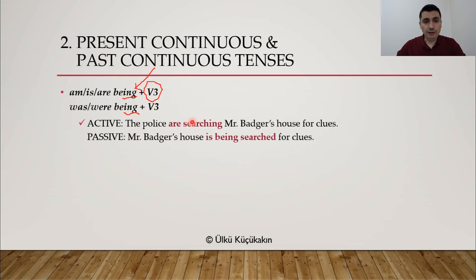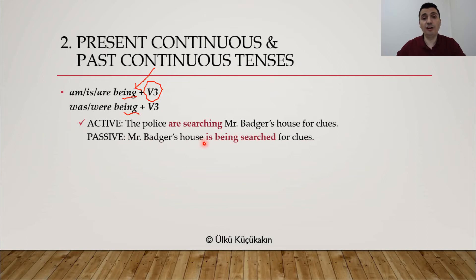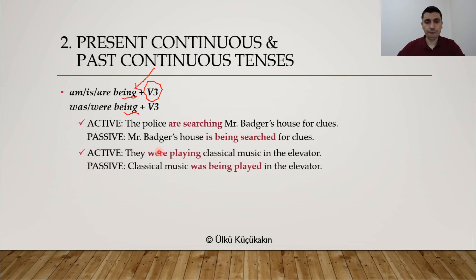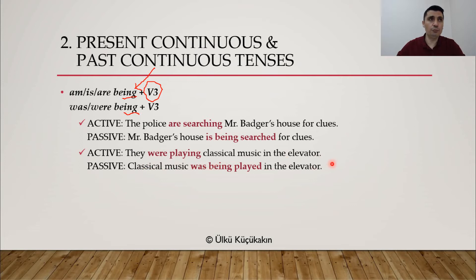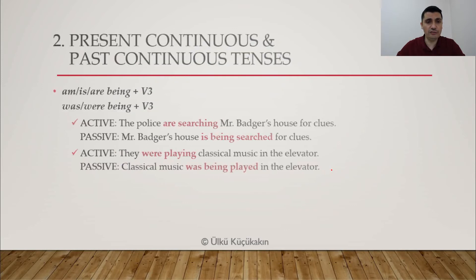For example: 'The police are searching Mr. Badger's house for clues' — this is active voice, and the police is not very important here. In passive: 'Mr. Badger's house is being searched for clues.' Mr. Badger's house is singular, so we need IS. We need BEING because this is continuous tense, and we need verb 3 because this is passive. Or: 'They were playing classical music in the elevator' — passive: 'Classical music was being played in the elevator.' This is past continuous tense.